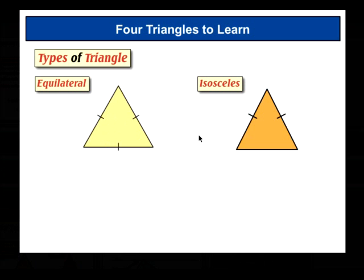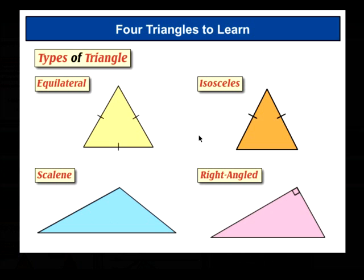Next, the isosceles triangle, where two of the sides are equal. Next, the scalene triangle, where none of the sides are equal. And finally, the right-angled triangle, where one of the angles is a right angle.